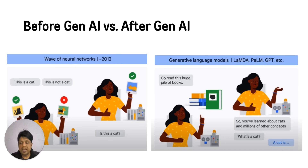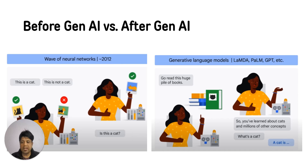But after Generative AI, AI models can actually generate images of a cat, or if you feed them lots of information about cats, they can also provide information about what a cat is. Before Generative AI, they were doing a very basic exercise of classifying whether an image is of a cat or not. After Generative AI, they can generate a cat or tell you lots of information about cats.